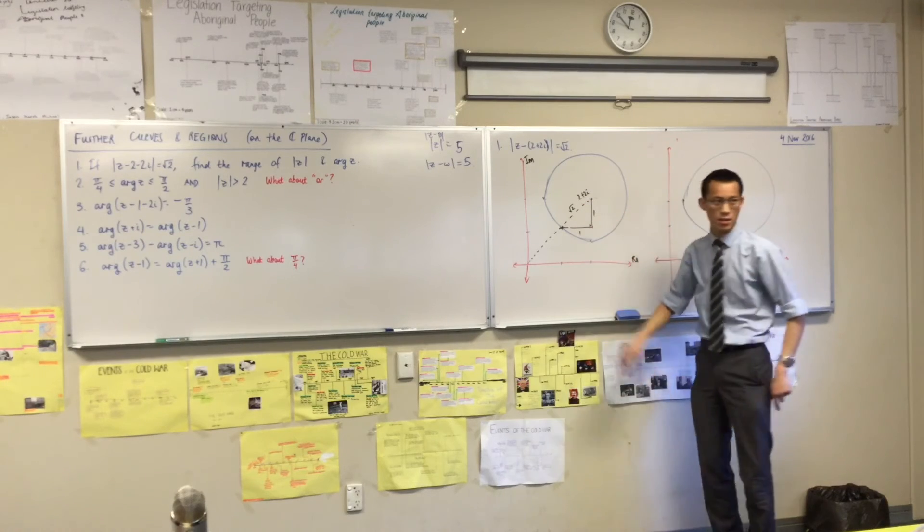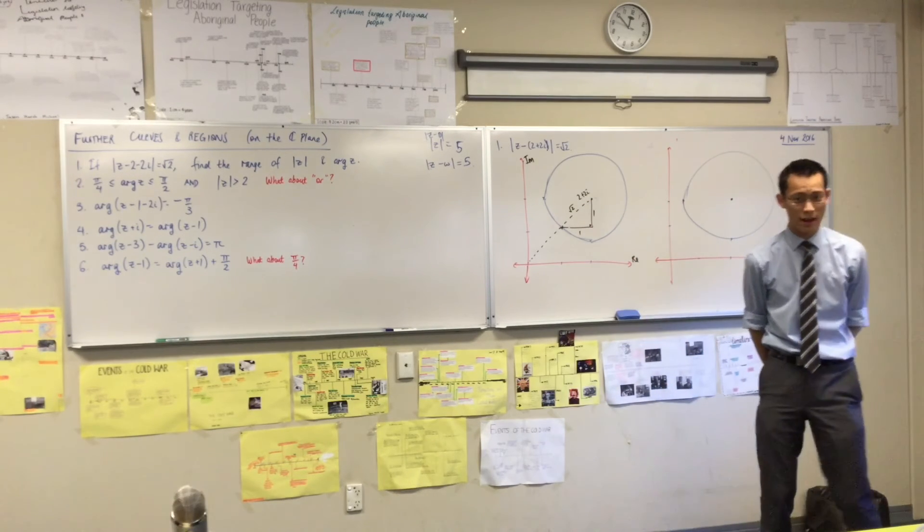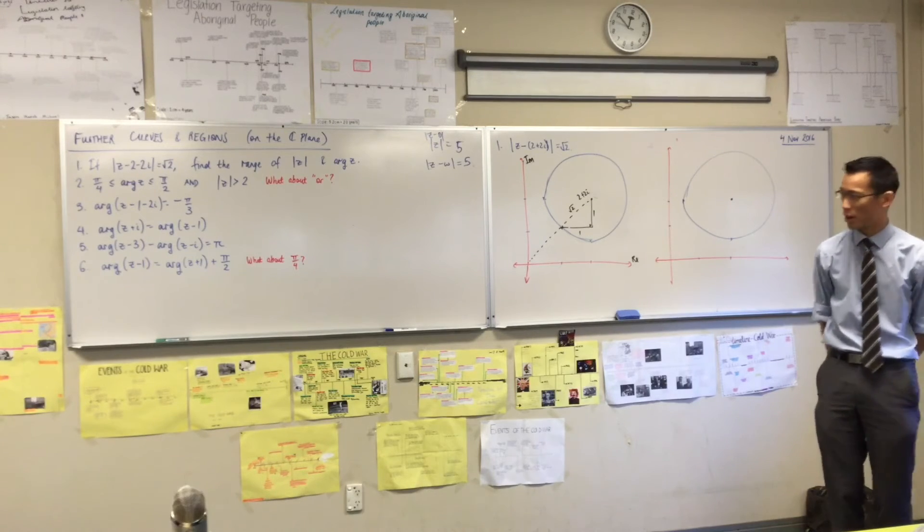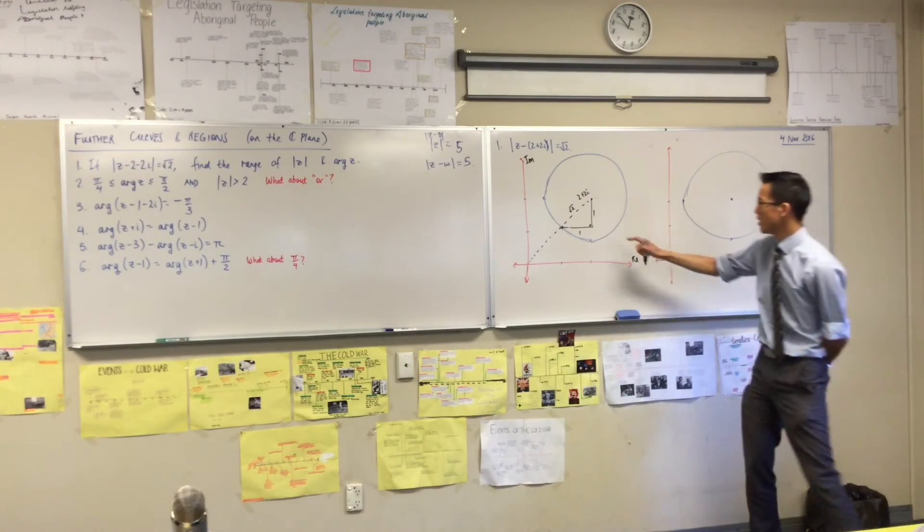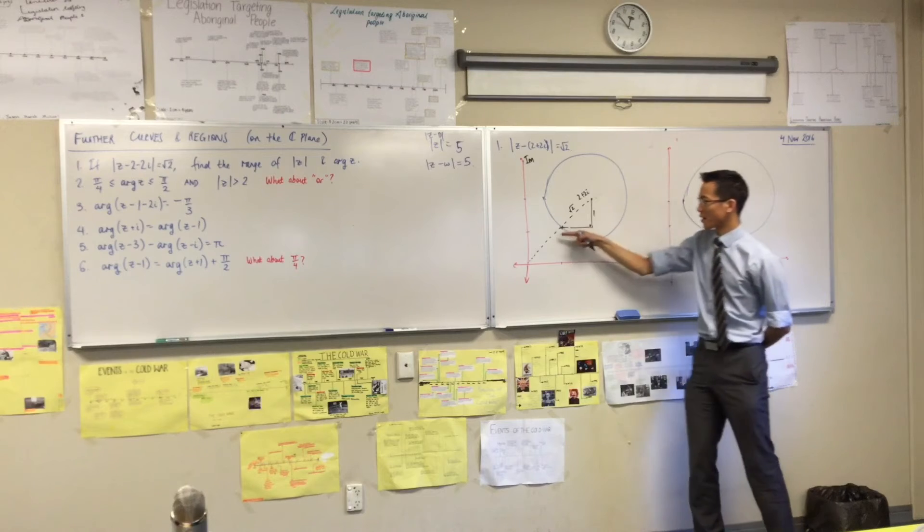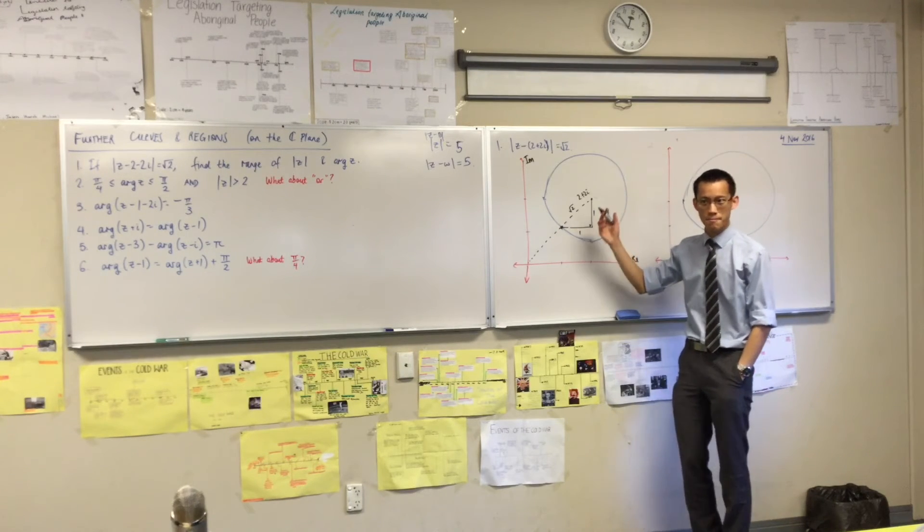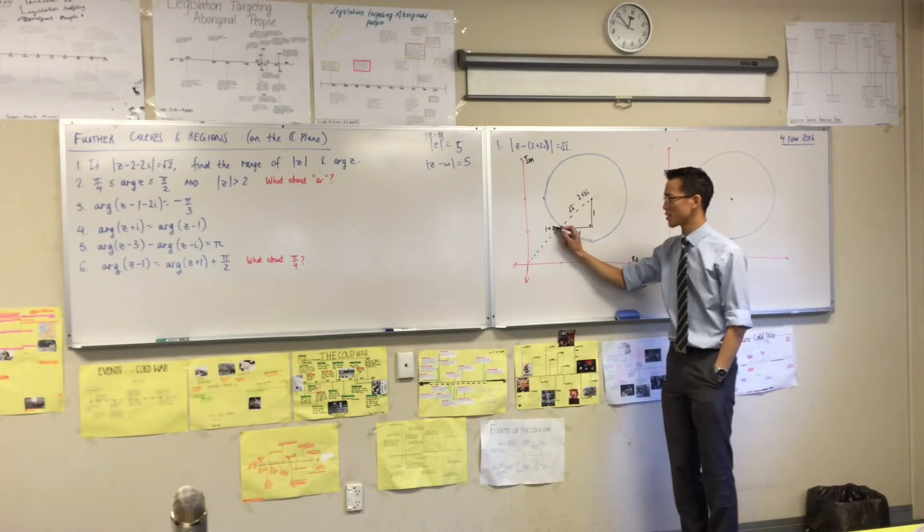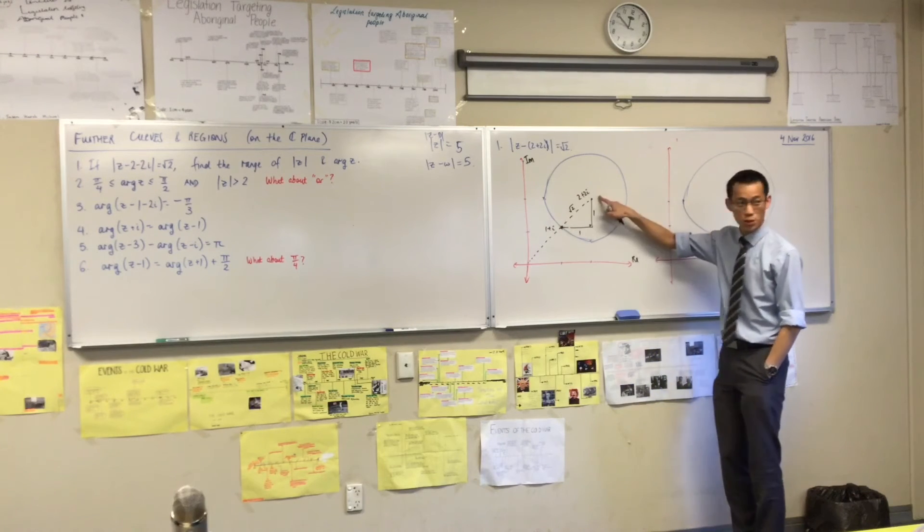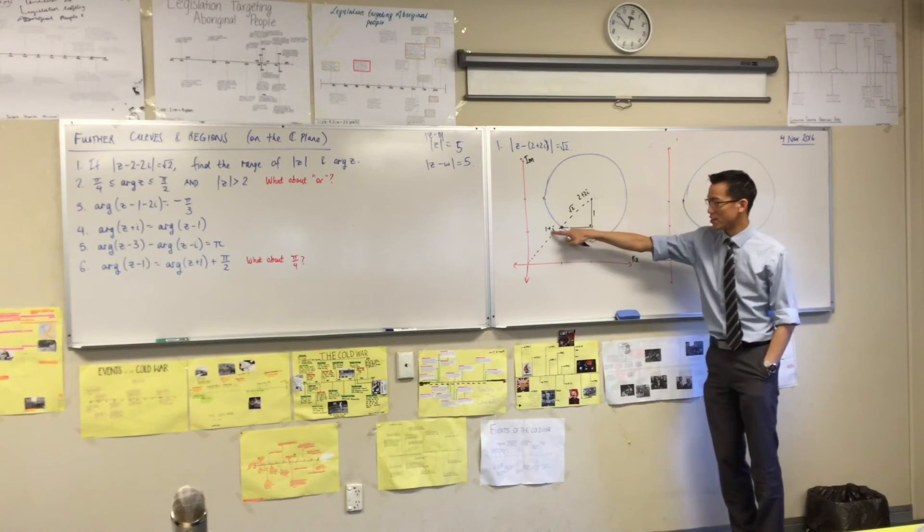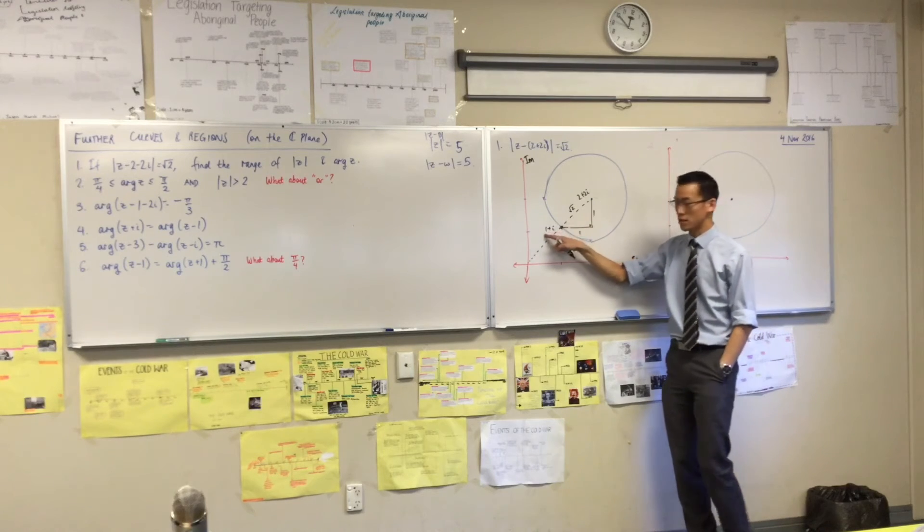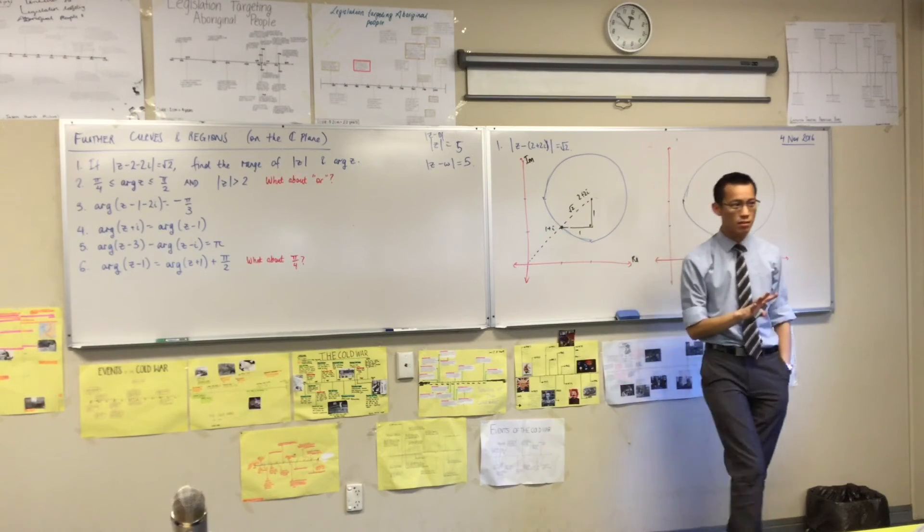Pretty sure that's the 1, 1 root 2 triangle that you use for your exact ratio for trig. So, if this is 1 down and 1 across, then what are the coordinates of this point from 2 plus 2i? I think it's just going to be 1 plus i, isn't it? Like, there's 2 plus 2i, you went down, that meant you took away an i, you went to the left, means you took away 1. Are you happy with that? Does that make sense?